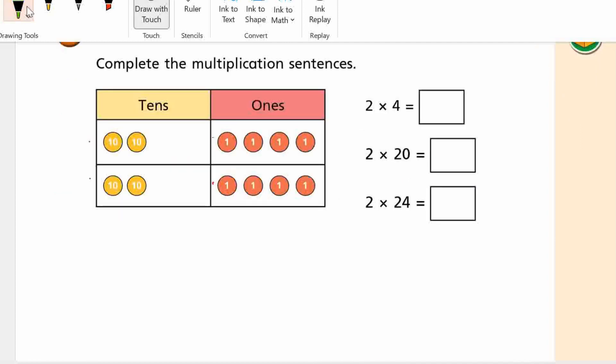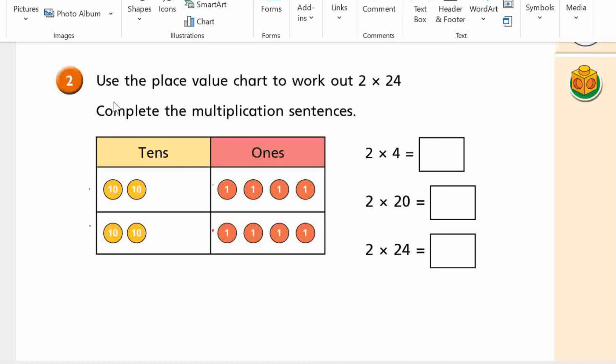So here we have our tens and our ones. Complete the calculation. Use the place value chart to work out 2 times 24. Here you have two tens and four ones. So first of all, they want to calculate the ones, so they want to do this part. Okay? So we're calculating this part first. What's 2 times 4? 8.